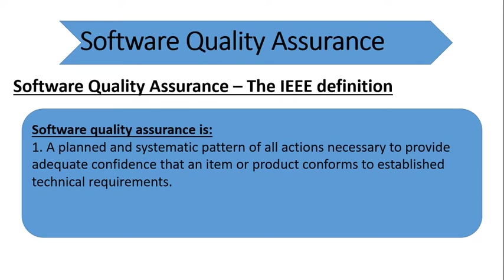This means the SQA plan already defines what types of actions and what types of standards are applied to the development process — it is a planned and systematic pattern. Software quality assurance is the set of activities that define and assess the adequacy of software processes to provide evidence and confidence that the software processes are appropriate for producing software of suitable quality.